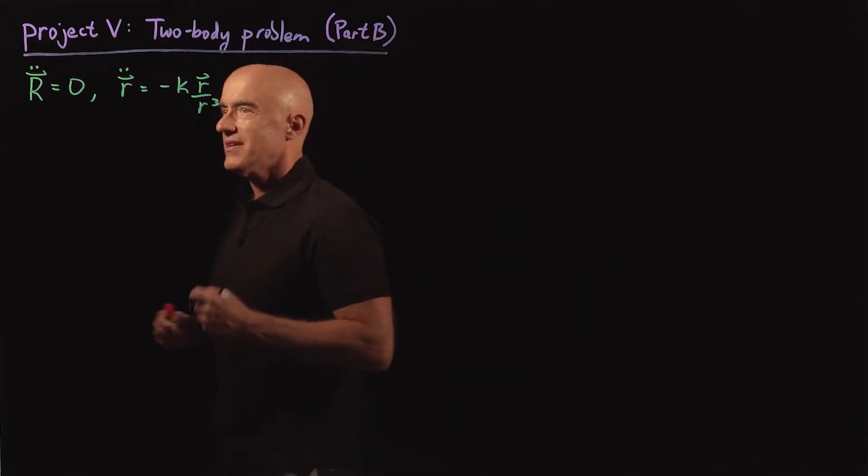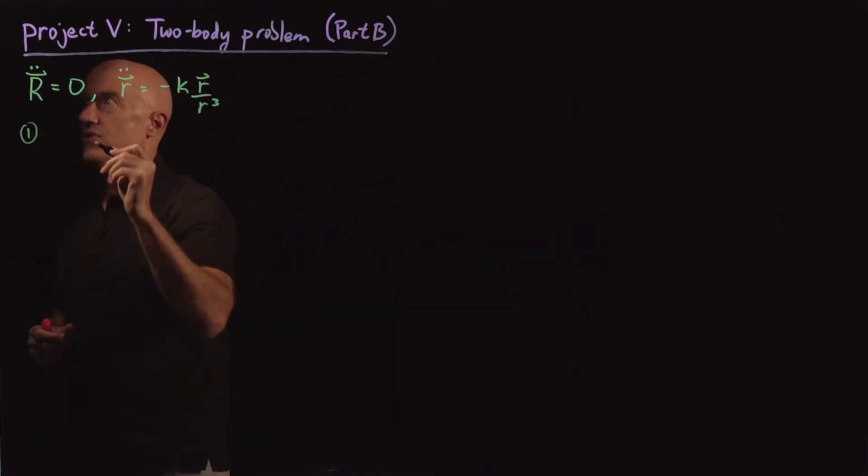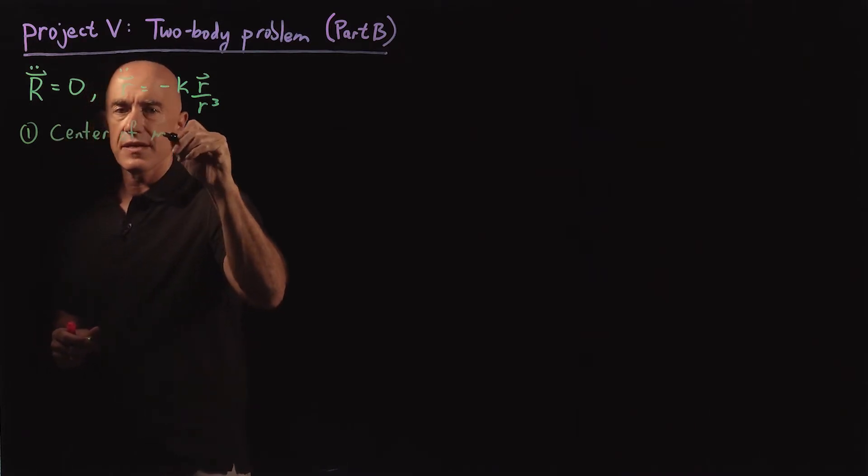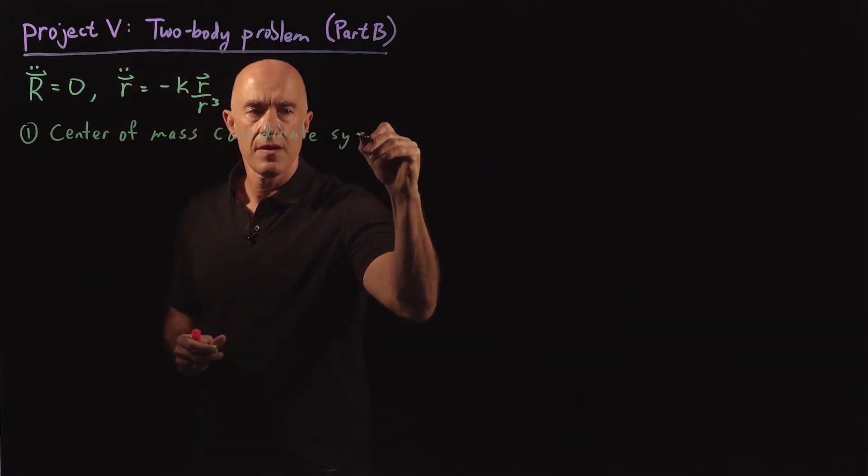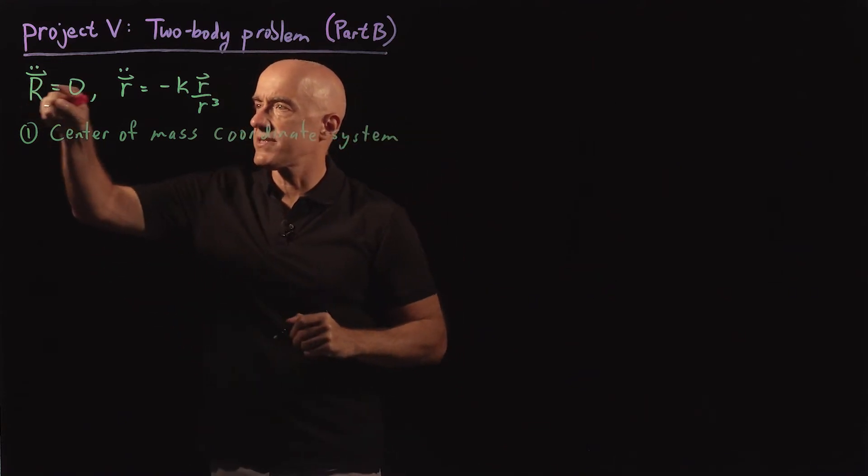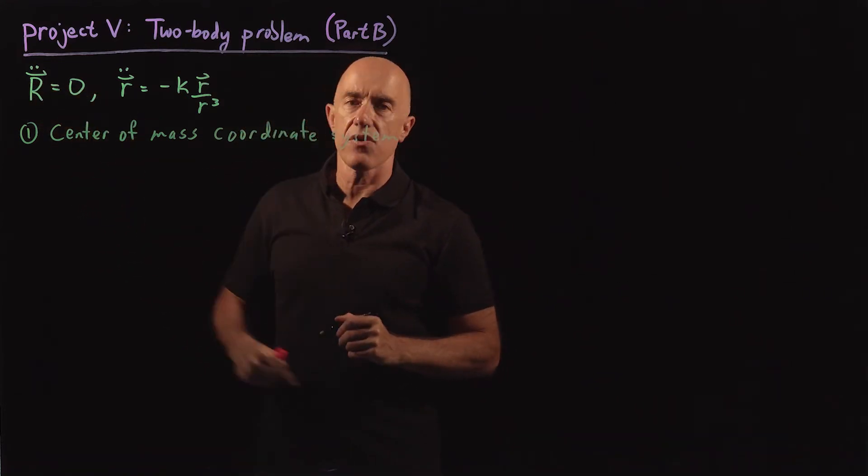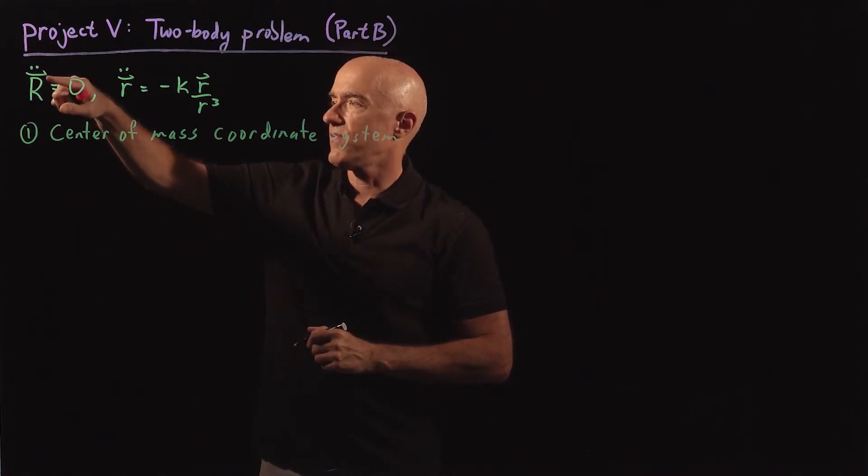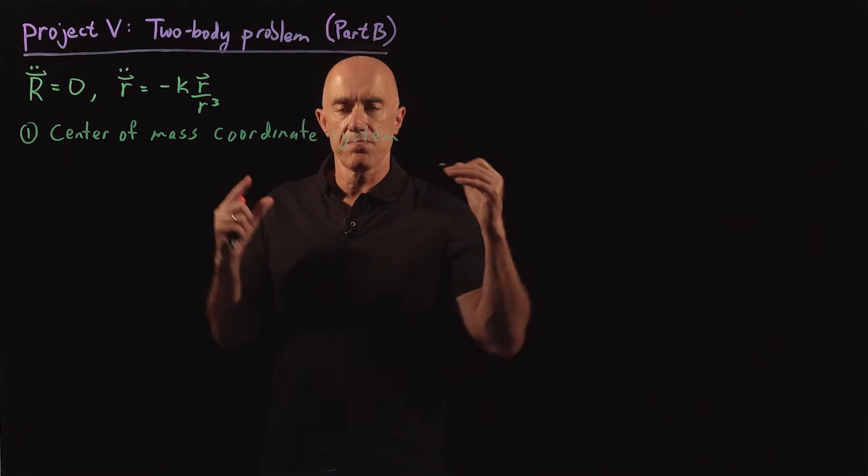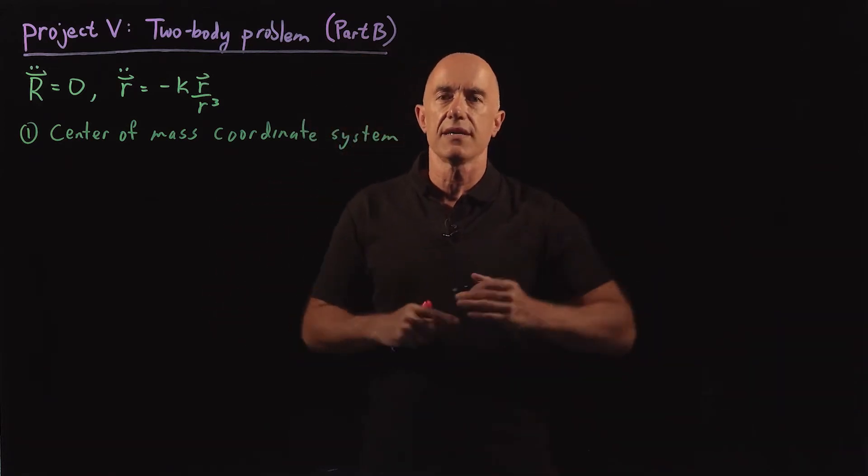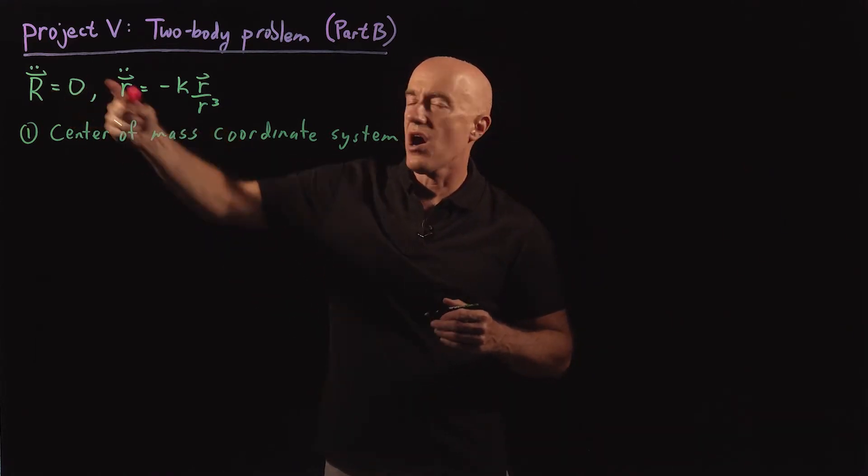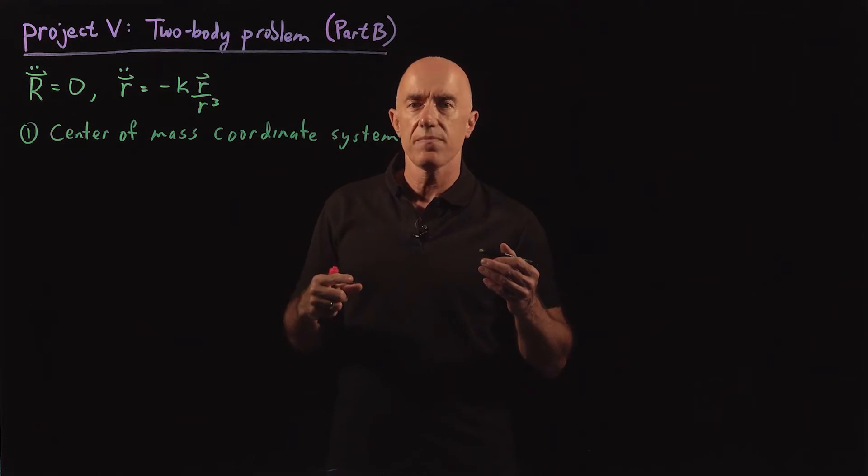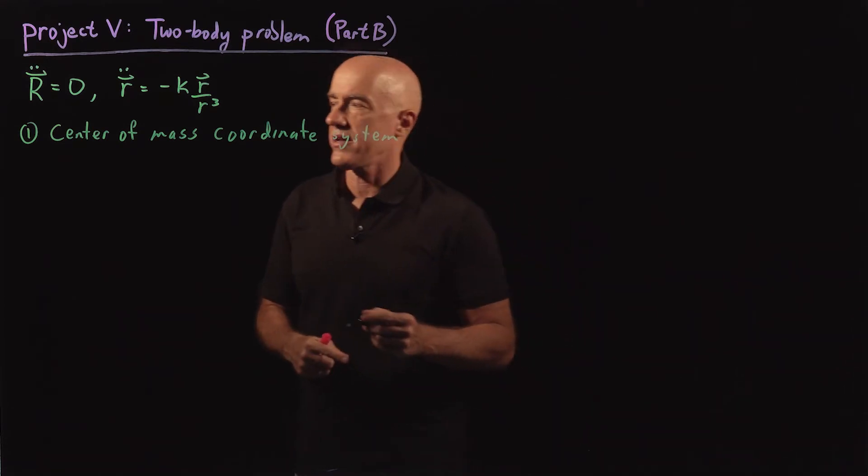So the first thing we're going to do is use what's called the center of mass coordinate system. We know that the acceleration of the center of mass coordinate is zero. So that means that r is moving at constant velocity. We're going to make our coordinate system also move at constant velocity so that in that coordinate system then r dot will be zero. And then we're going to put the origin at r equals zero.